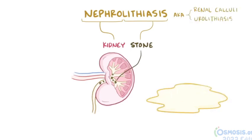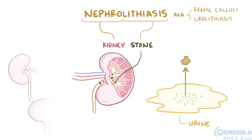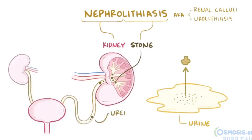Kidney stones form when solutes in the urine precipitate out and crystallize, and although these most commonly form in the kidneys themselves, they can also form in the ureters, the bladder, or the urethra.